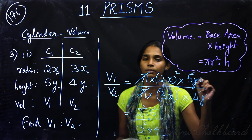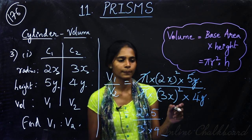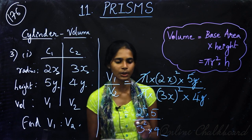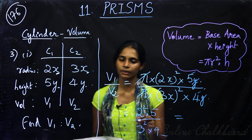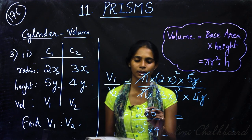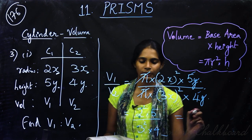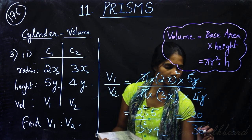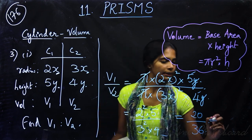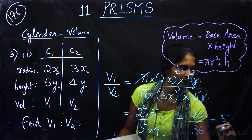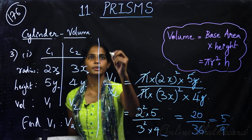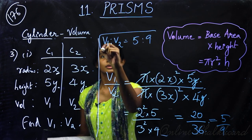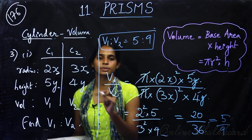Solving this, we get V1 by V2 equals 4 into 5, divided by 9 into 4, which is 20 divided by 36. Simplifying, that is 5 by 9. Therefore, the ratio between the volumes V1 is to V2 is 5 is to 9.